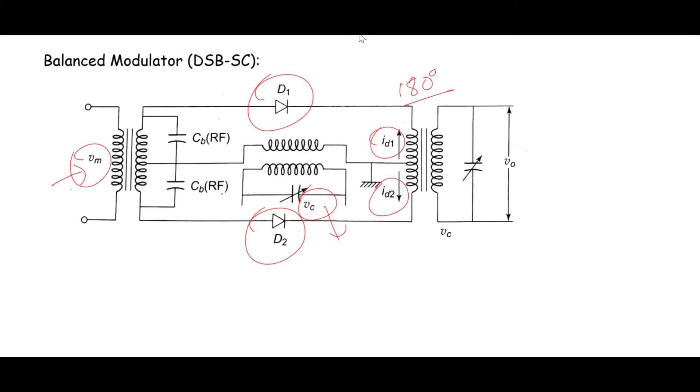We can say that total current I1 will be subtraction of these two currents ID1 and ID2. So let us first try to figure out these two currents ID1 and ID2. At the input of D1 we will be getting VC plus VM as one voltage, and at input of D2 we will be getting VC minus VM. This is going to happen because VM is fed out of phase by 180 degrees to D2.